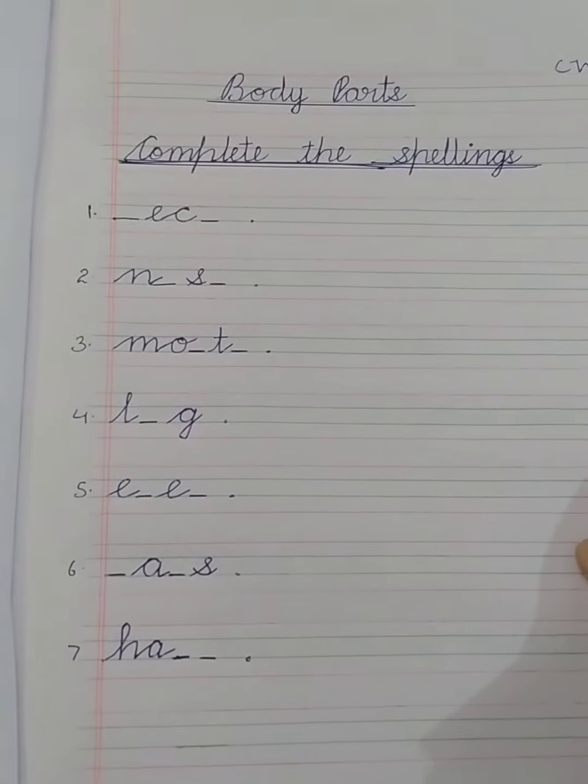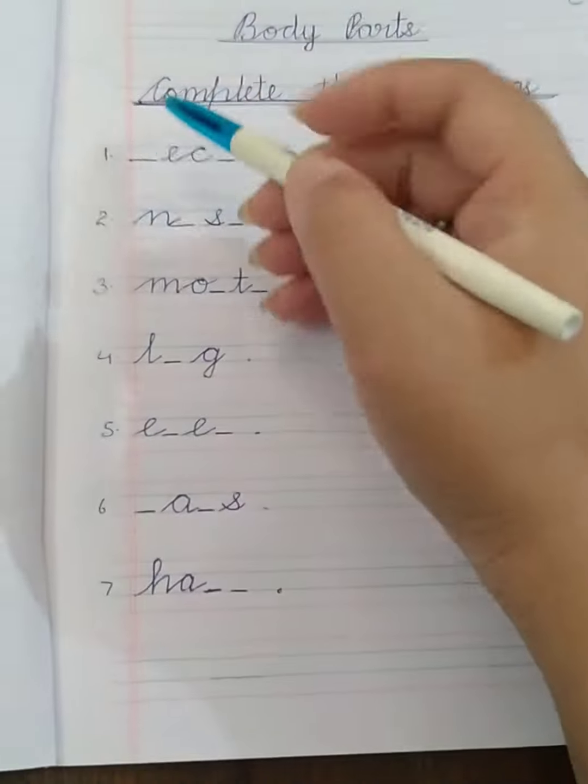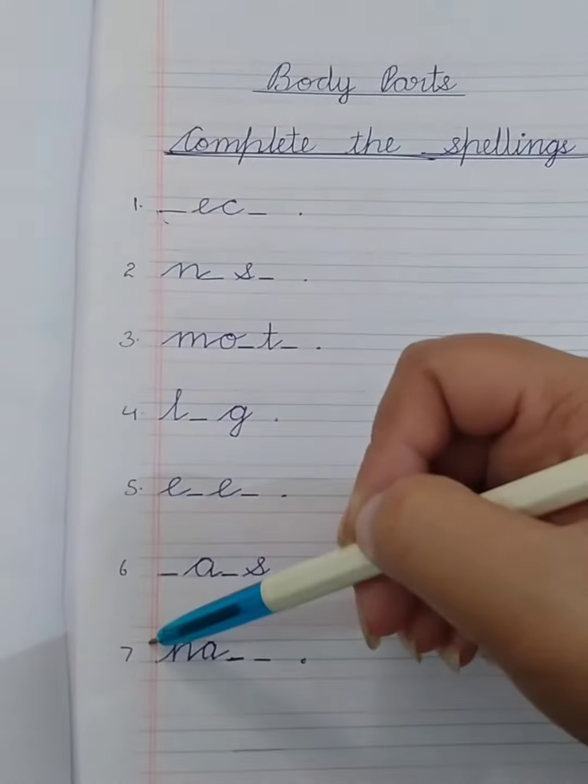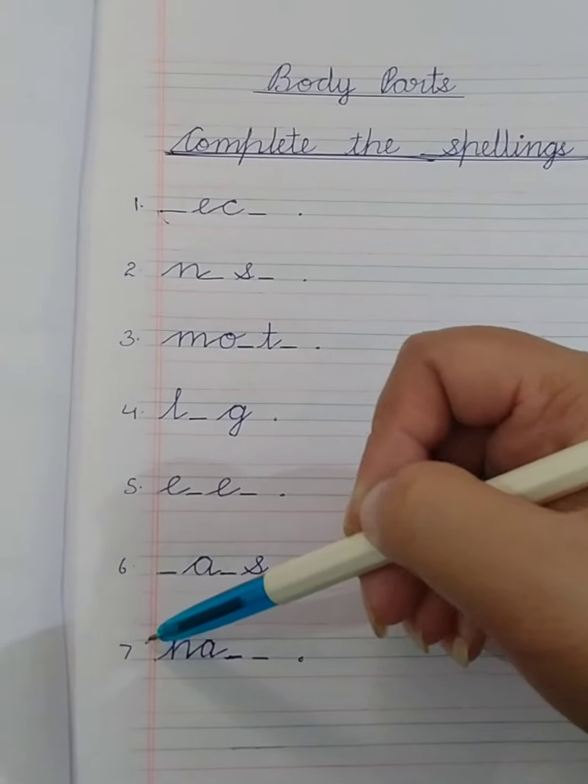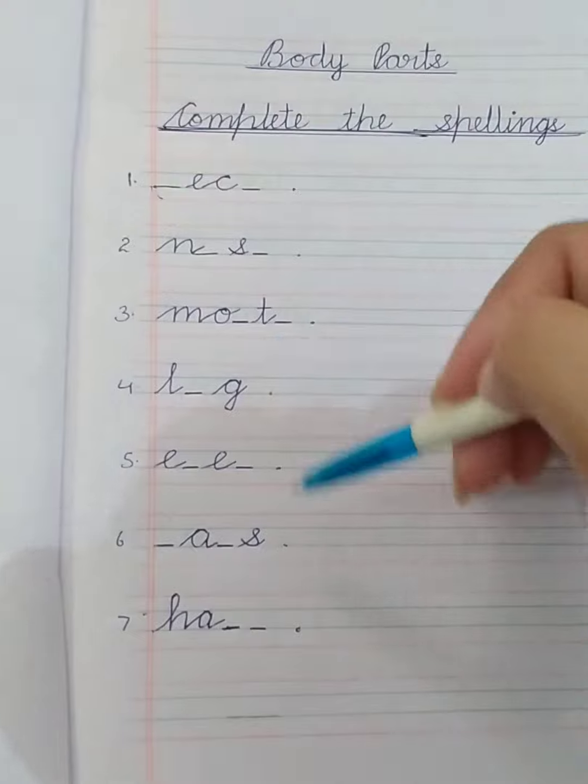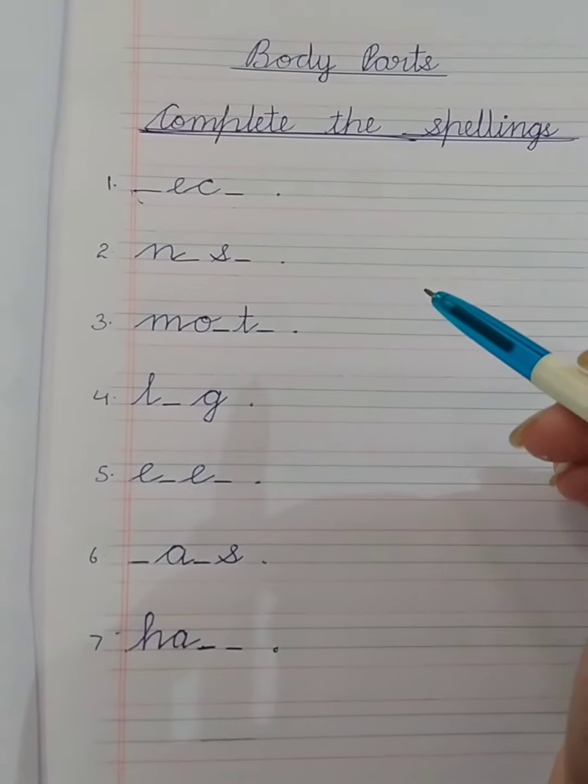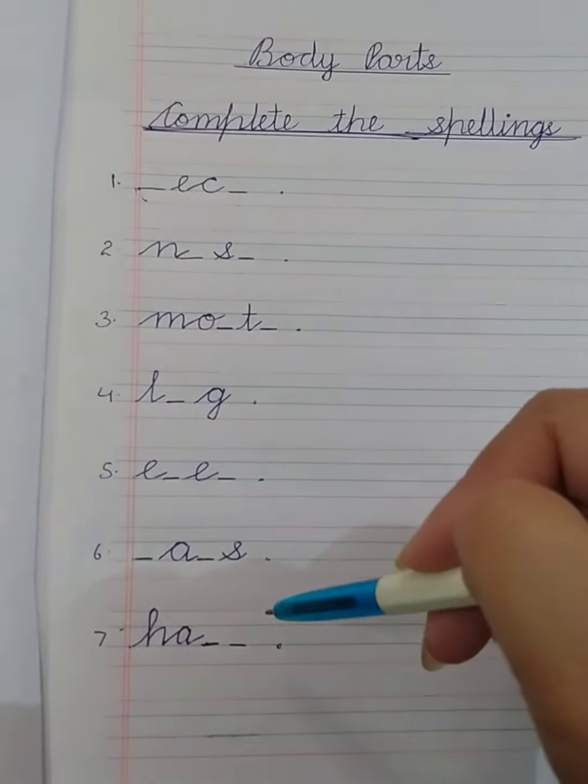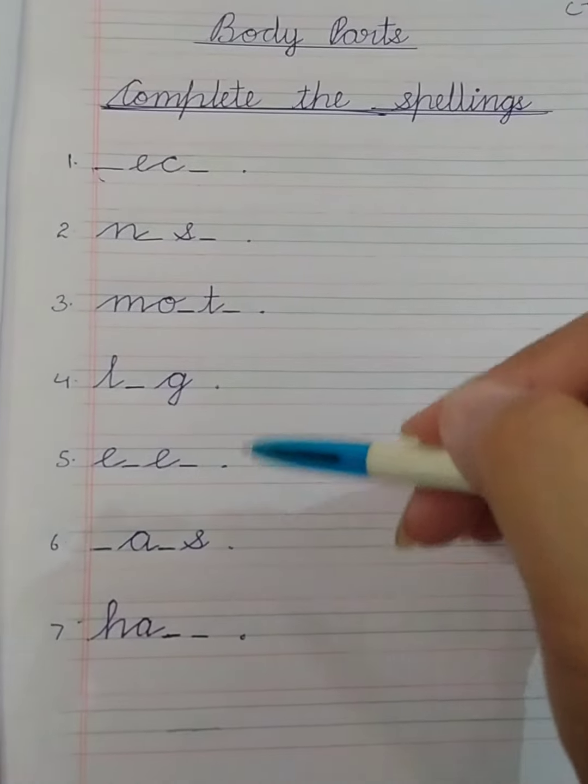Okay children, we have underlined it and now we will begin. First we will write 1 to 7 in the margin and then we will write these words, spellings. These are all incomplete spellings, we are going to complete them.